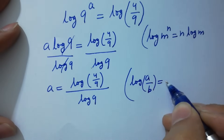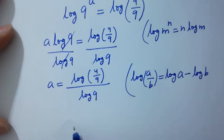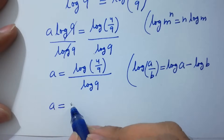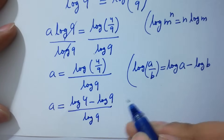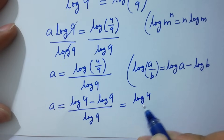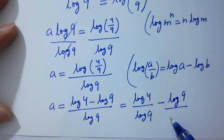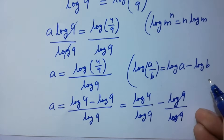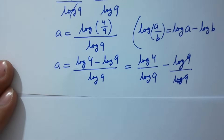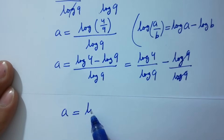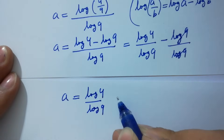Using log(a/b) equals log a minus log b, we get a equals log(4/9) over log 9, which equals log 4 over log 9 minus log 9 over log 9. Since log 9 over log 9 cancels, a equals log 4 over log 9 minus 1.